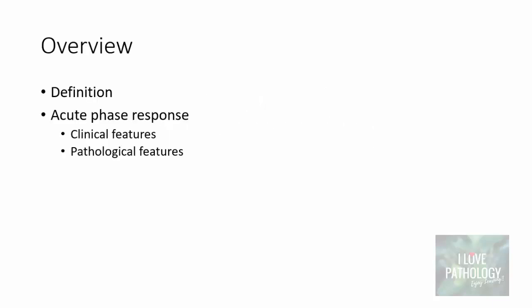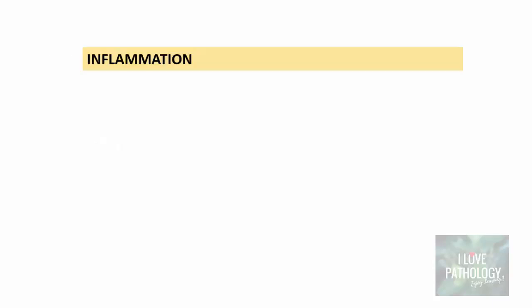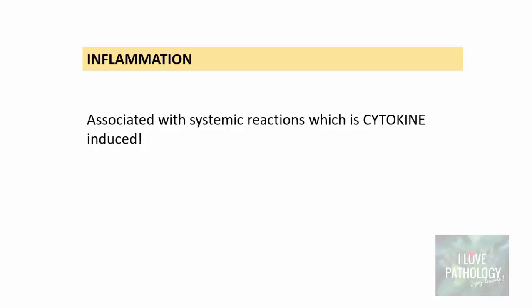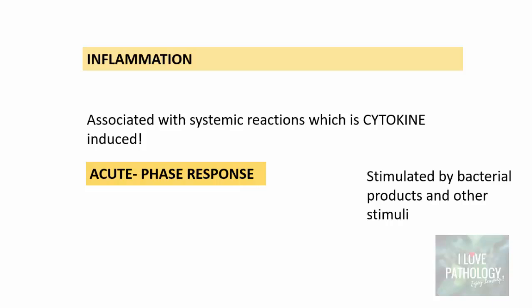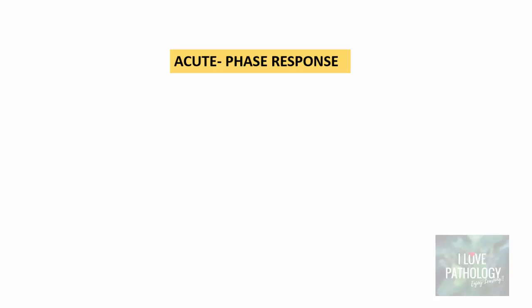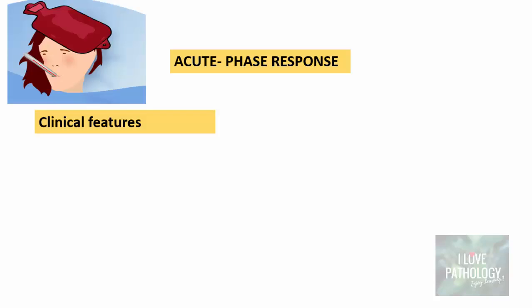In the next 10 to 15 minutes we will understand the various manifestations of inflammation in the form of acute phase response, and the various clinical and pathological features associated with it. We need to know that inflammation, even if it is localized, is usually associated with systemic reactions, and that is cytokine-induced. This cytokine-induced systemic reaction is referred to as acute phase response, which is stimulated by bacterial products and various stimuli like tumor necrosis factor, interleukin-1, interleukin-6, and various interferons.